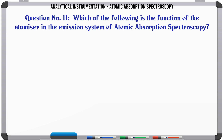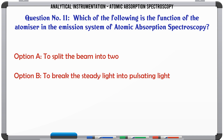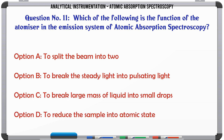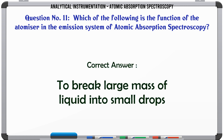Which of the following is the function of the atomizer in the emission system of atomic absorption spectroscopy? A. To split the beam into two. B. To break the steady light into pulsating light. C. To break large mass of liquid into small drops. D. To reduce the sample into atomic state. The correct answer is: to break large mass of liquid into small drops.